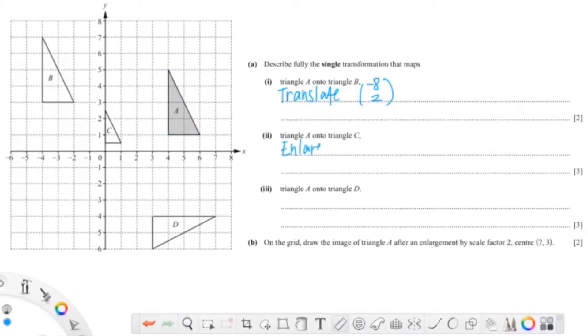So I'm going to write this down: enlargement at the point negative 4 and 0. Because this question is 3 marks, we've only given two points. We need to give one more, which is the scale factor.